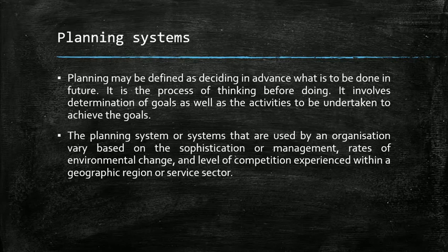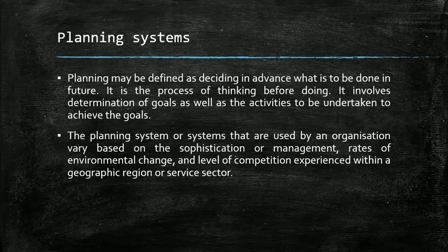Same as a personal career, a business also works on a planning system. A business decides its objectives, what type of planning system it will have, what the benefit of that is, and the process and functionality of that planning. Planning is working for the future, and it contains various elements such as studying the environment, level of competition, whether you're in service or manufacturing, and the geographical area in which you will be working.